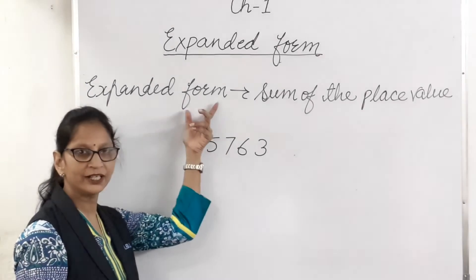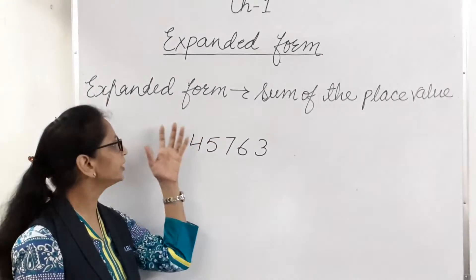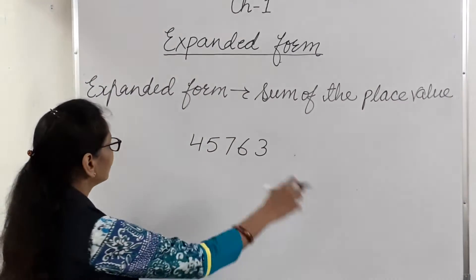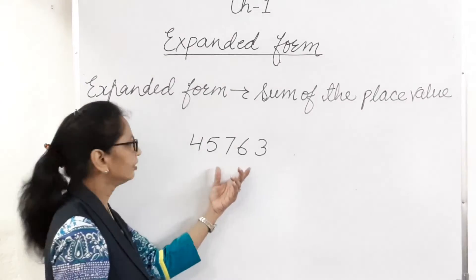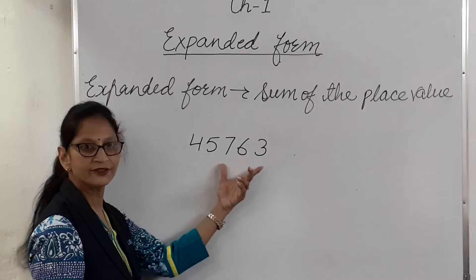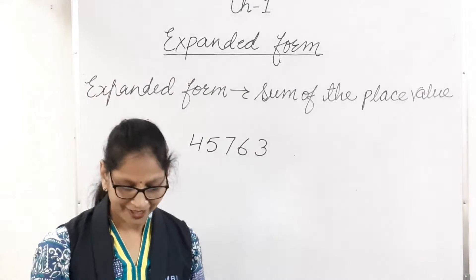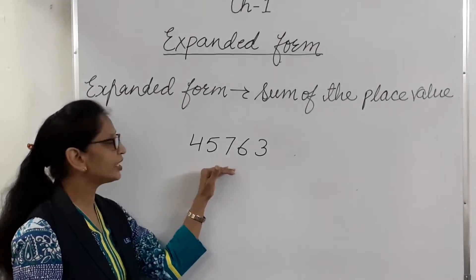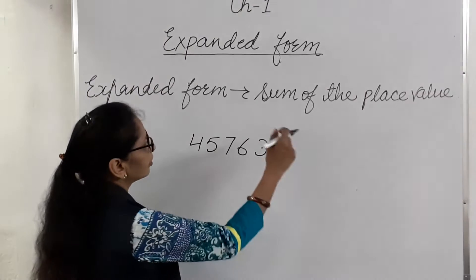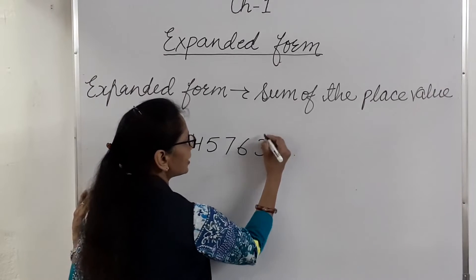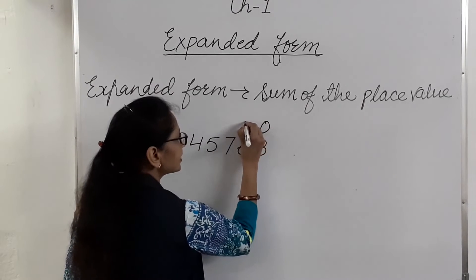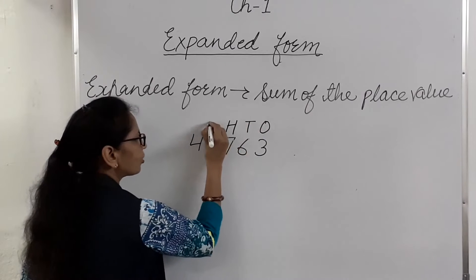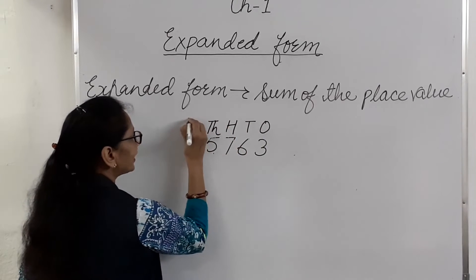Now we talk about expanded form. What is expanded form? Expanded form means the sum of the place values. Let us take an example. We have the number 45763. How to write it in expanded form? First we write the places of each digit. So 3 is in the ones place, 6 is in the tens place, 7 is in the hundreds place, 5 is in the thousands place, and 4 is in the ten thousands place.